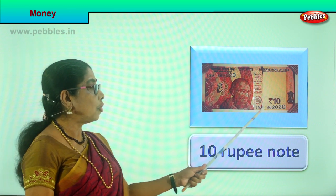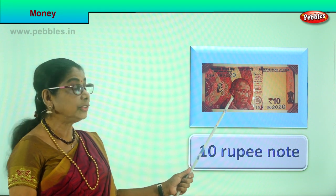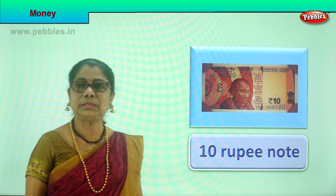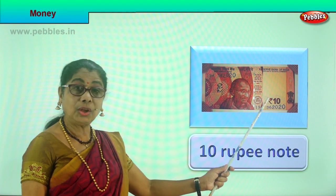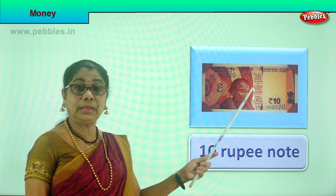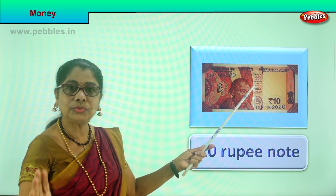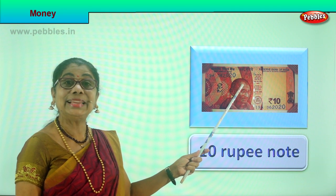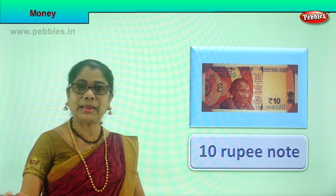Now look — you saw the ten rupee coin, and the value of this ten rupee note is the same. This note is brown in color and written 'rupees ten'. Both the coin and the note have the same value. This is the ten rupee note — look at the note that mummy or daddy can show you.